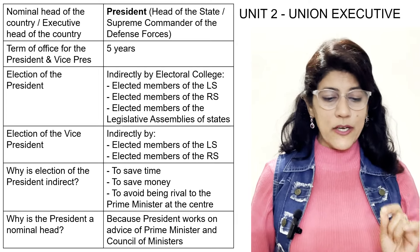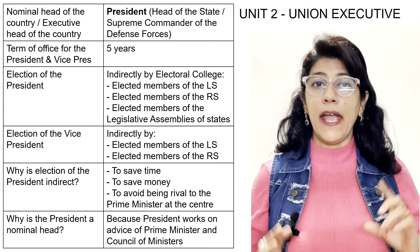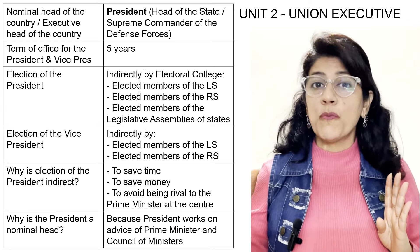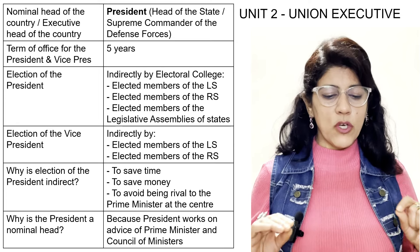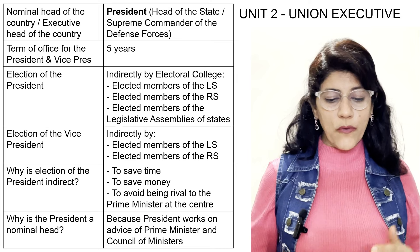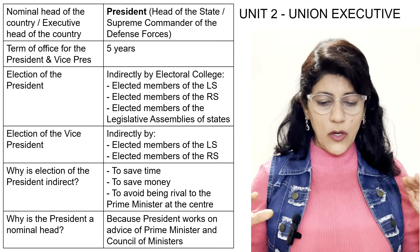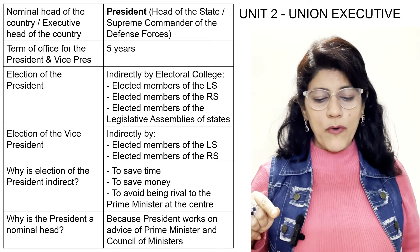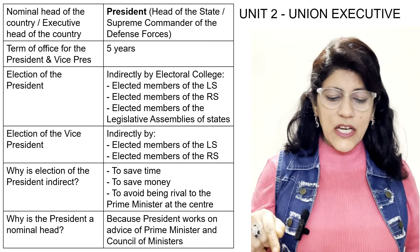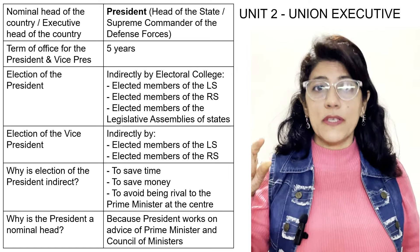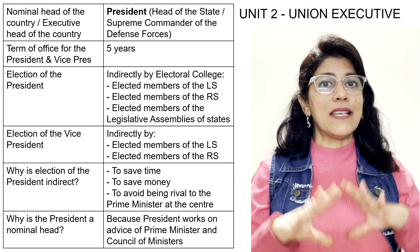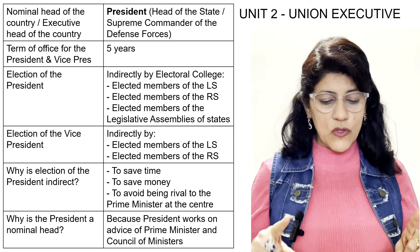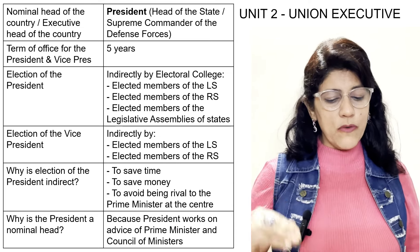Moving from union legislature to union executive. Nominal head, executive head, head of state, and supreme commander of defense forces — all four questions have one single answer: the President. The term of office for the President or Vice President is five years. Election of the President: indirectly by electoral college consisting of elected members of Parliament and elected members of legislative assemblies of the states. The Vice President is elected indirectly by elected members of Lok Sabha and Rajya Sabha.